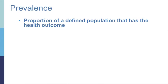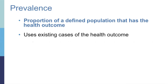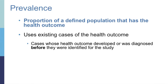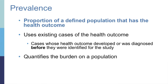Prevalence is the proportion of a defined population that has a particular disease or health outcome of interest. Prevalent cases are existing cases of disease — cases whose disease developed or was diagnosed before they were identified for the study. Prevalence is useful to quantify the burden of a health outcome or disease in the population at a given point or period of time.